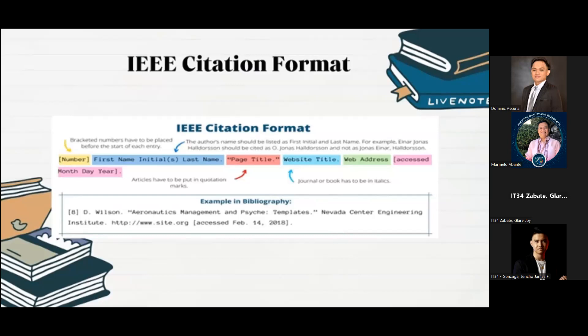A citation example of IEEE is here below. First is the bracketed number [8], then D. Wilson, then the quotation marks for "Aeronautics Management and Site Templates," then the website title, which is Nevada Center Engineering Institute, then the site, then last is the access date, which is February 14, 2018. That's all for IEEE referencing styles.